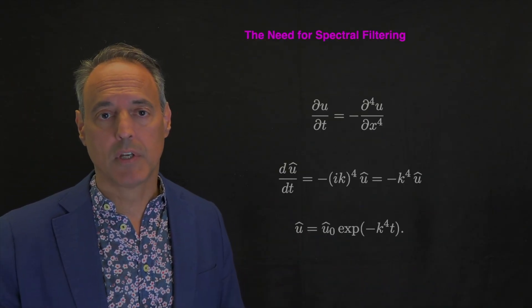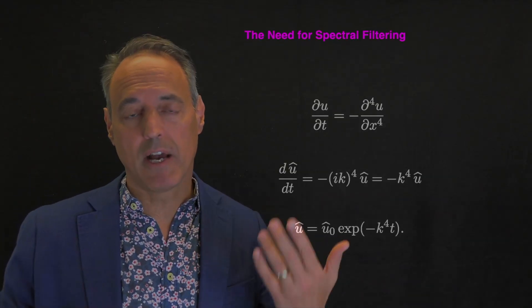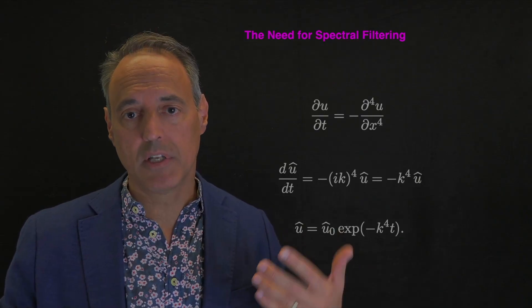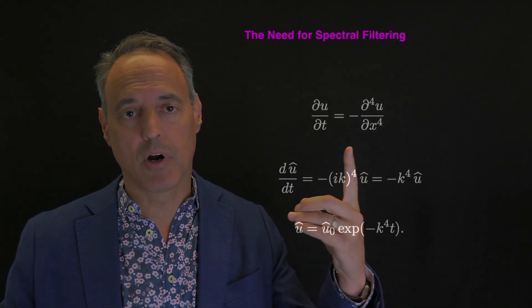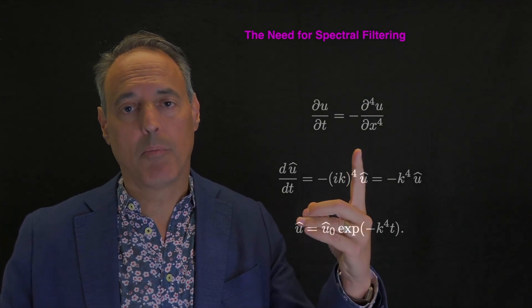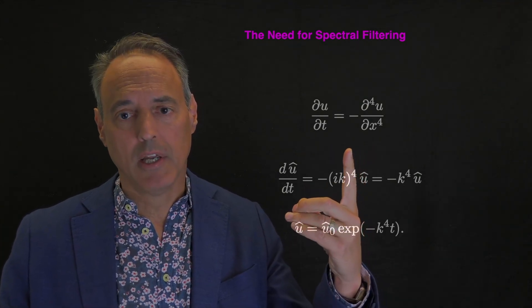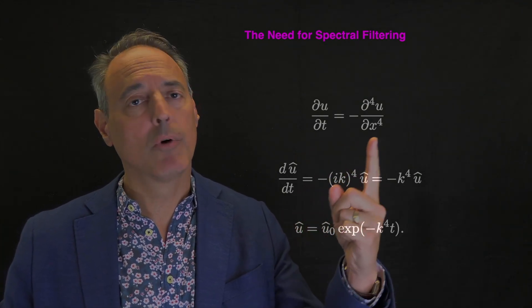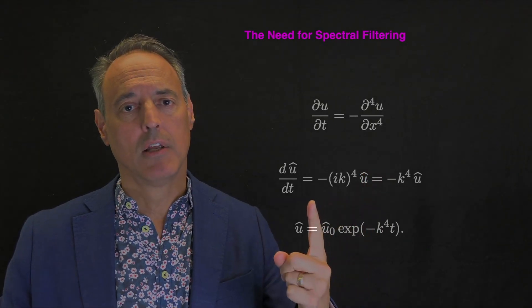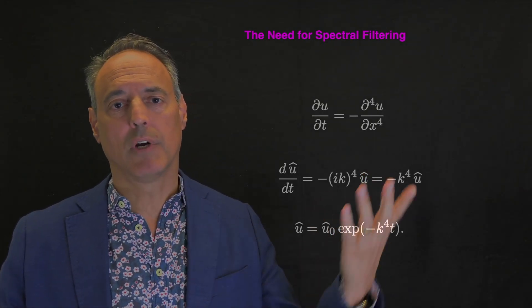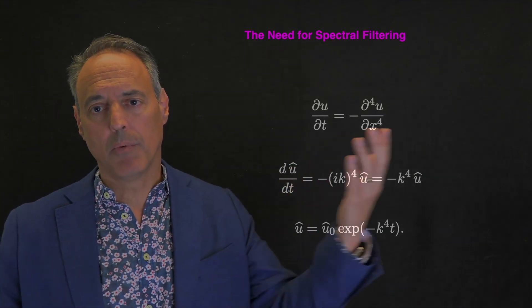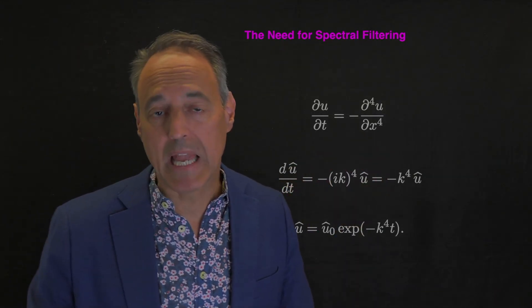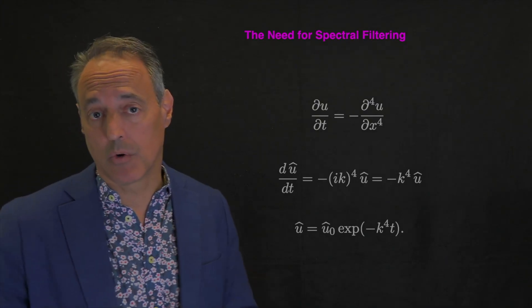So I want to introduce this in the context of what is in fact a problem that becomes numerically stiff, which is a hyperdiffusion problem. This is just a simple problem. I can write down the solution analytically. In fact, let's just Fourier transform it. If you Fourier transform this, you just get this ODE here, you can just write down the solution.